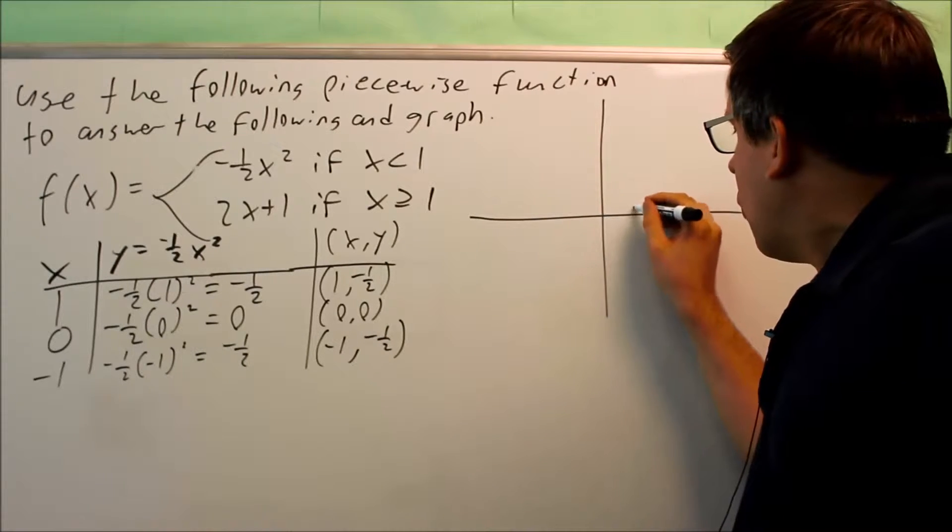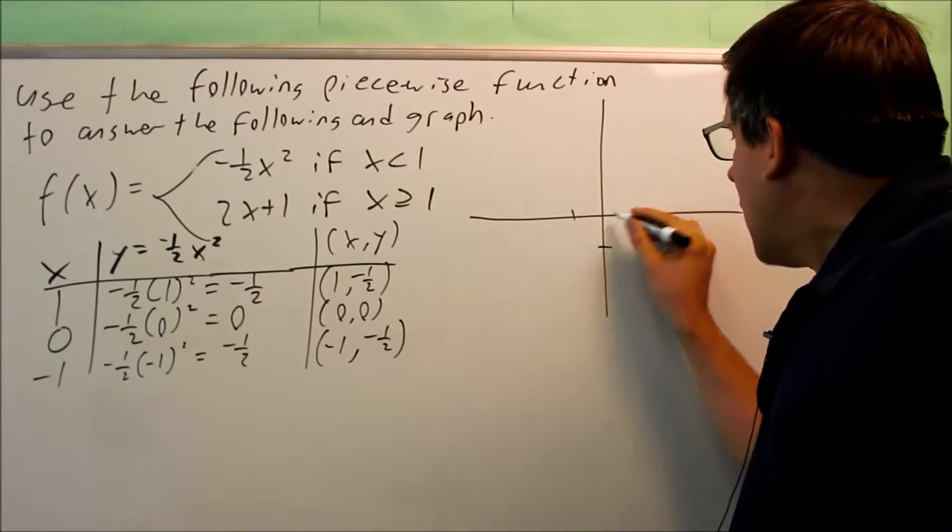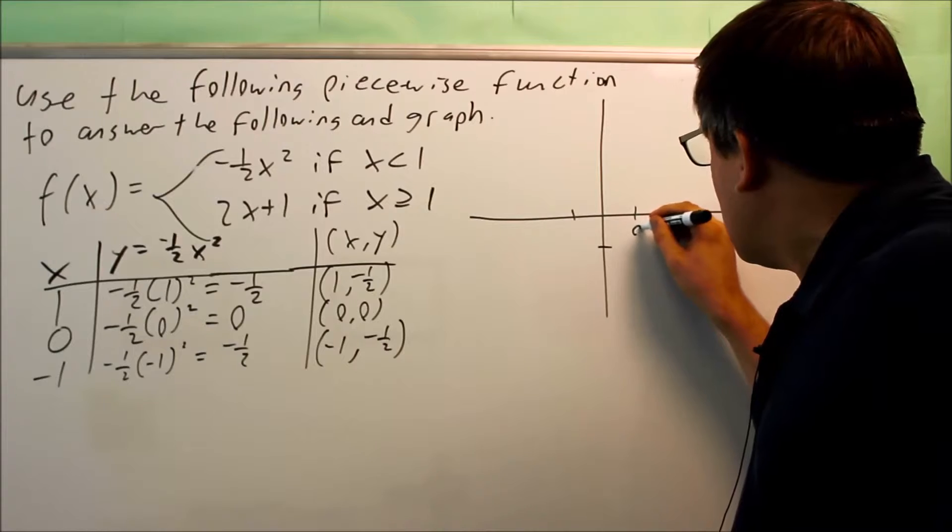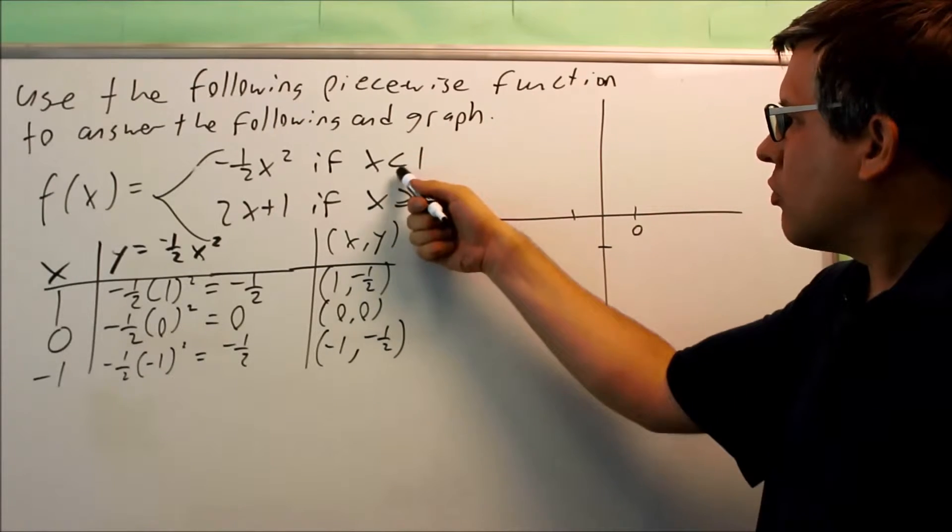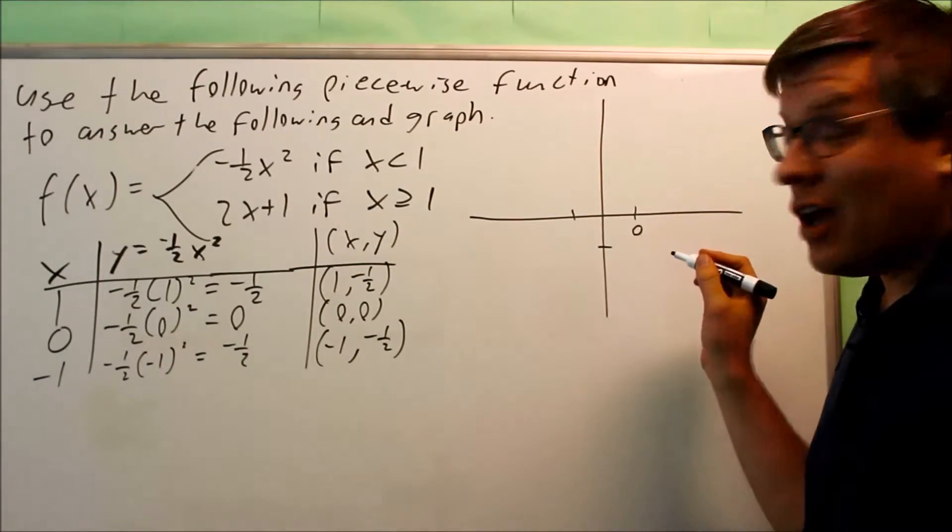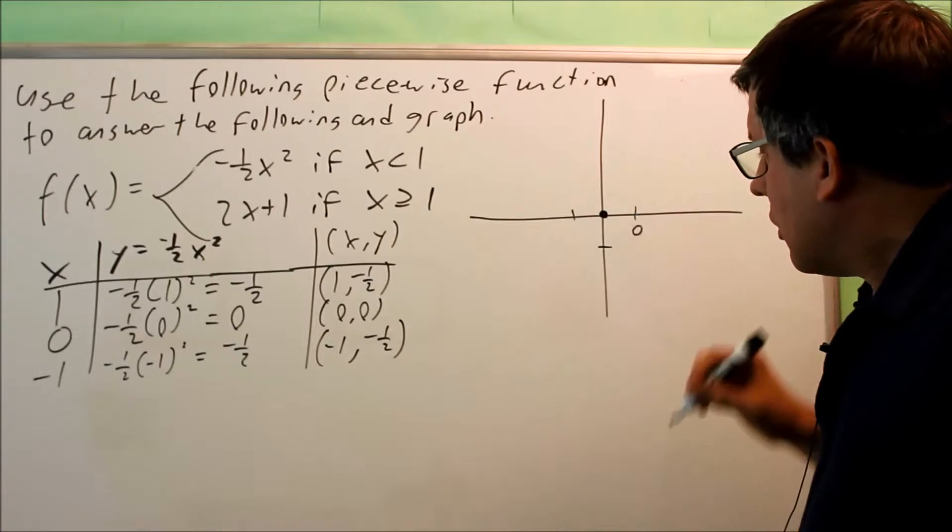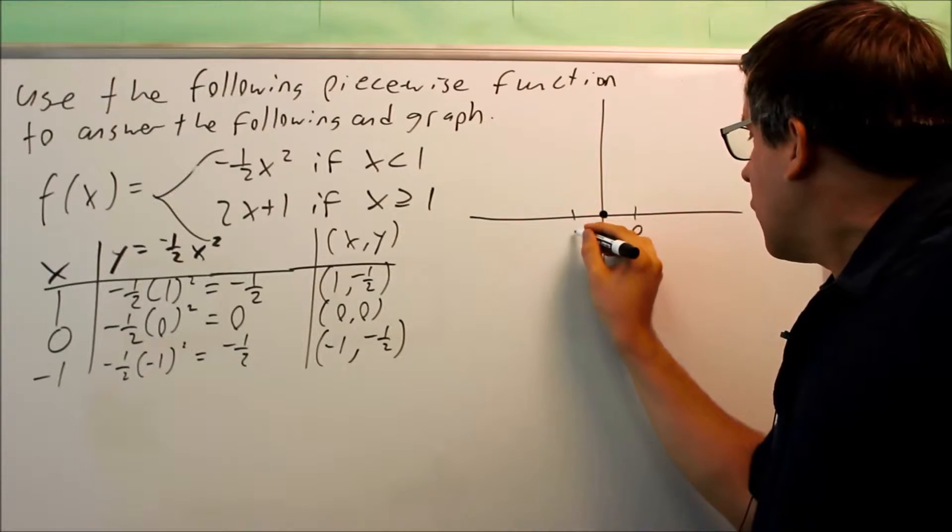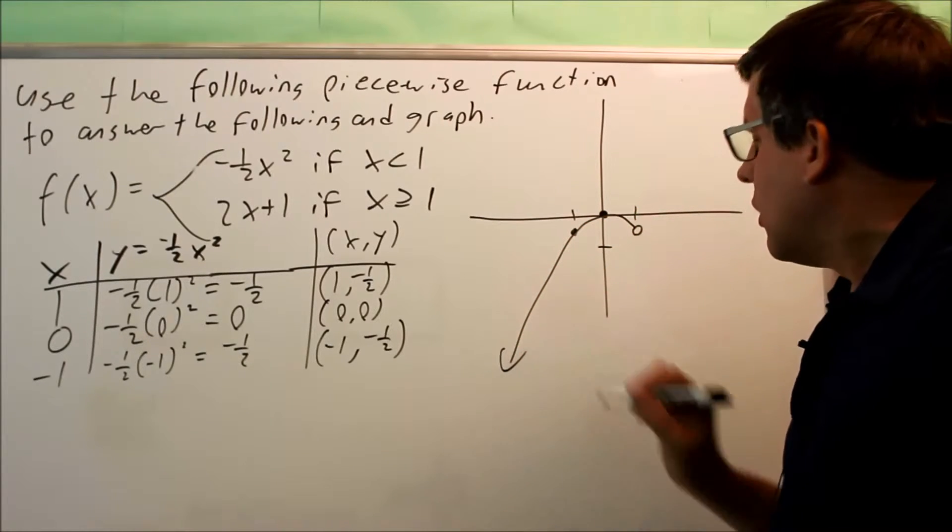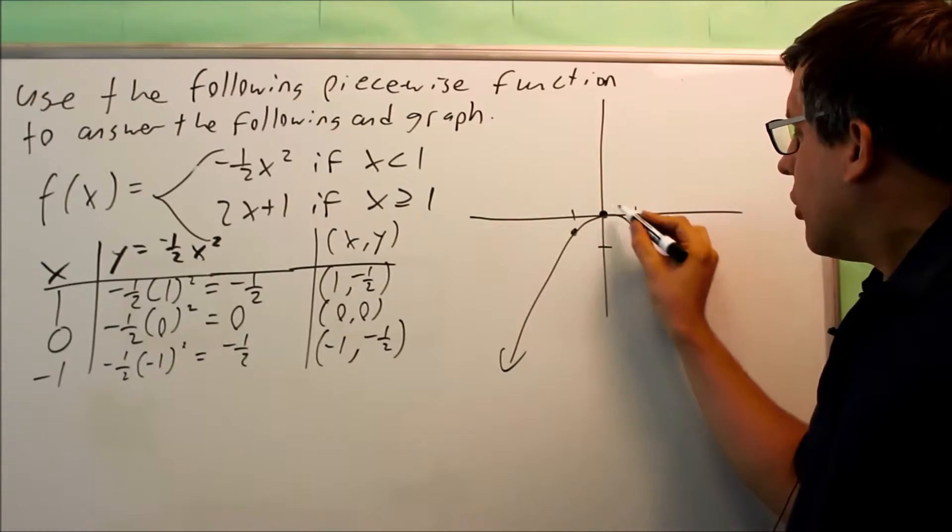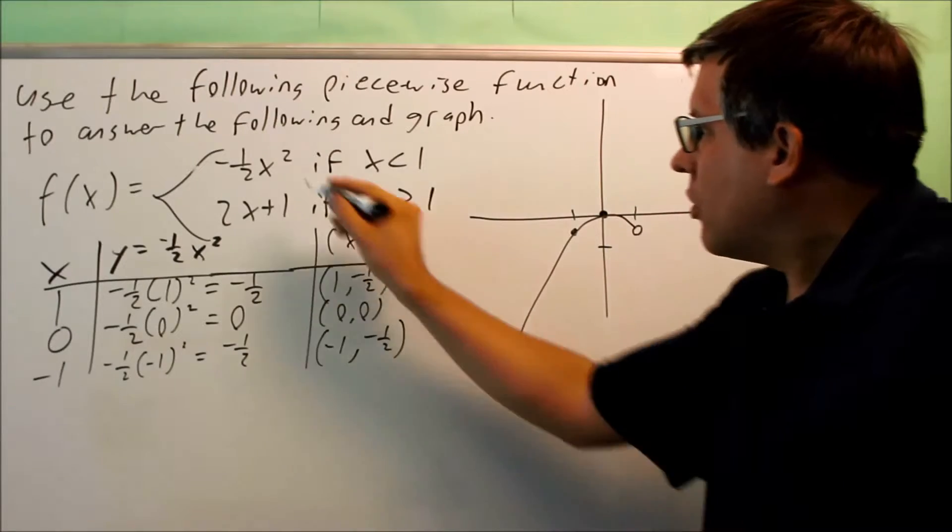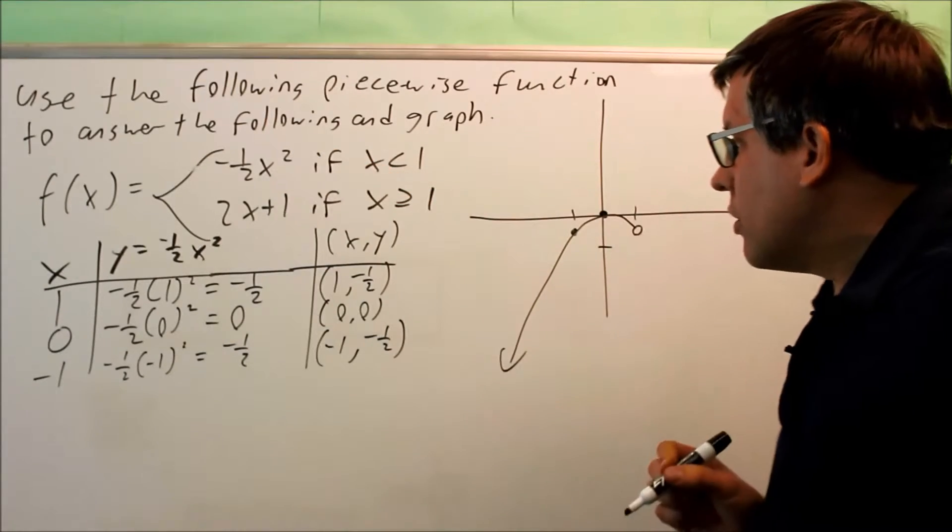The first one is 1 and negative 1 half, right here. That point is going to have to be an open circle because that point was not included here. The next one was 0, 0, that's here. And then I have negative 1 and negative 1 half is there. The graph is going to go up and go down, and it's going to keep going down forever. That's common for a quadratic one that has a square on it.